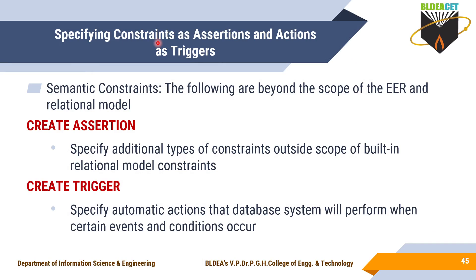Assertion is used for specifying the constraints and actions. After specifying what actions you want to perform on those constraints, if the constraint is not followed, then you have to specify what action to take. That is what we call a trigger. The semantic constraints are beyond the scope of the EER and relational model.